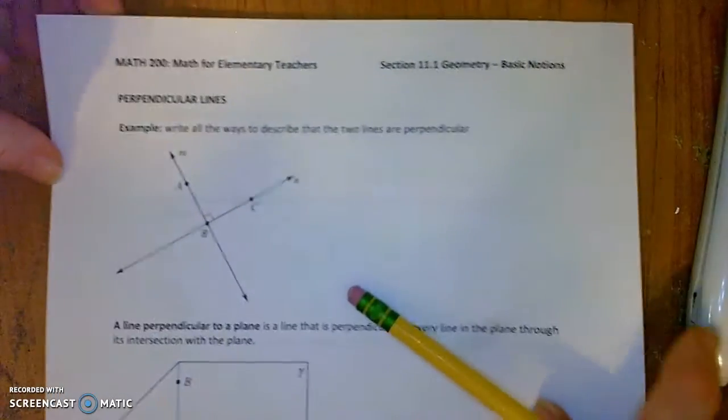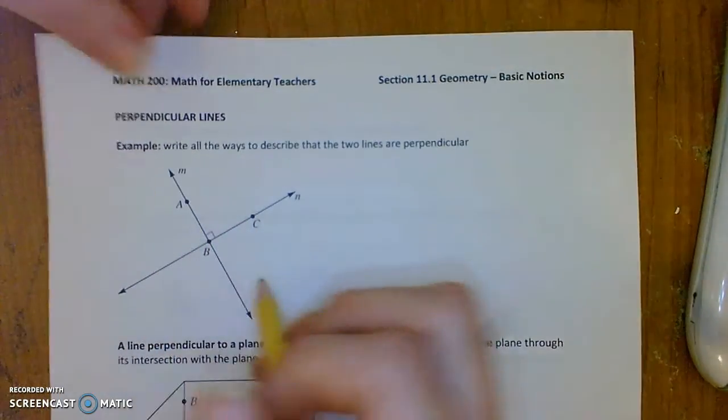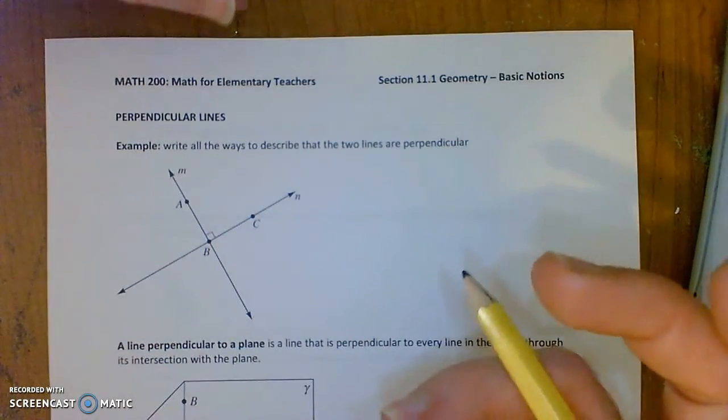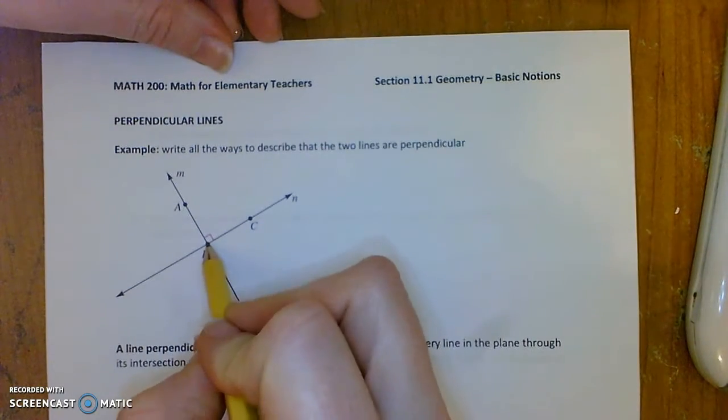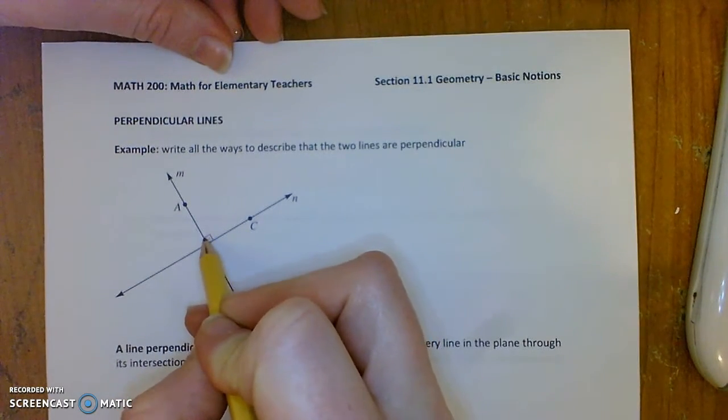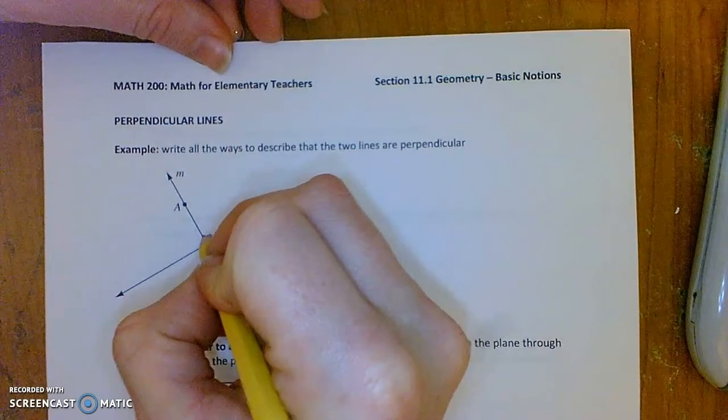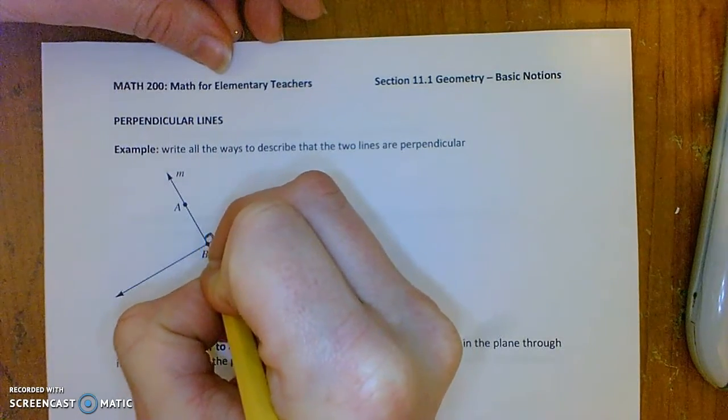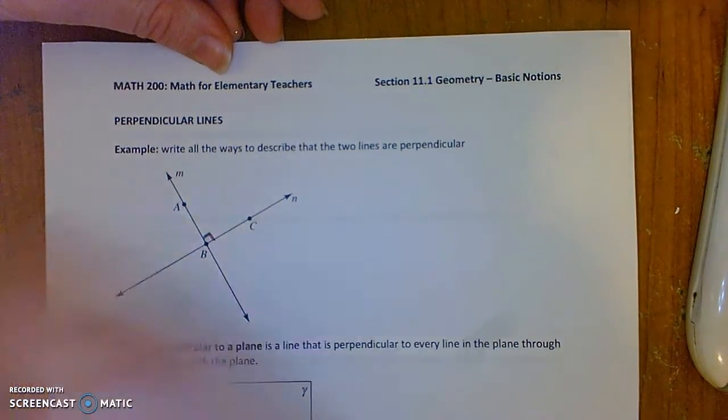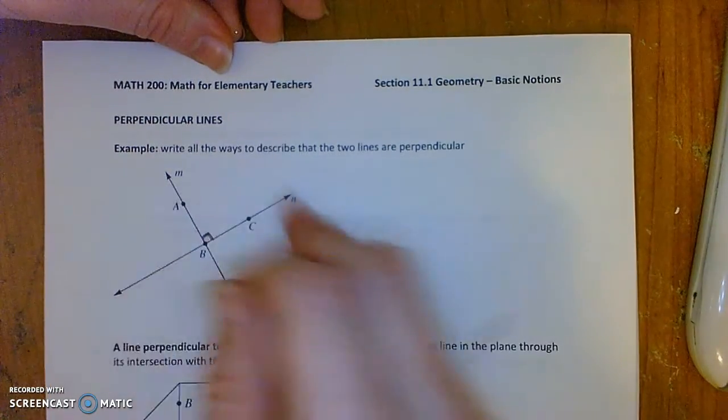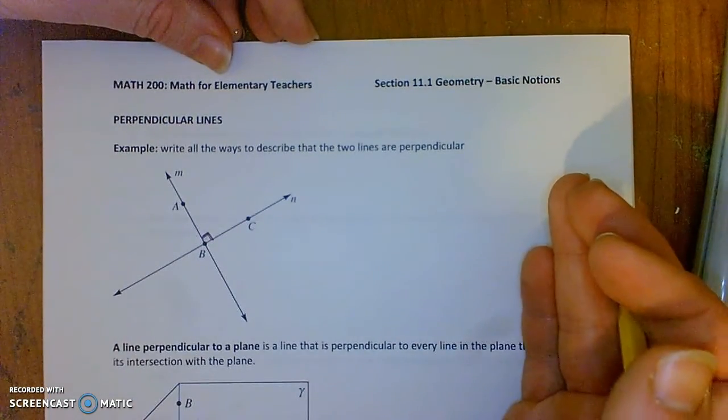Next, let's talk about perpendicular lines. So you say two lines or two segments or two rays are perpendicular if the angle of their intersection is a 90 degree angle. And then we'll denote that with drawing a little box in the interior of the angle there.